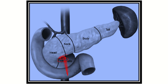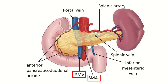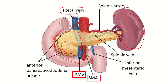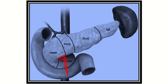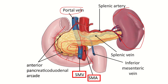In the question, they said the large vessel is passing in the inferior part of the head — that means in this region — but anterior to the uncinate process, that means this area. So a vessel passing inferior to the head but anterior to the uncinate process. We have to find a vessel which arises from a large vessel and passes anterior to the uncinate process and inferior to the head of the pancreas.